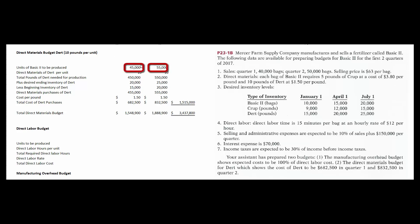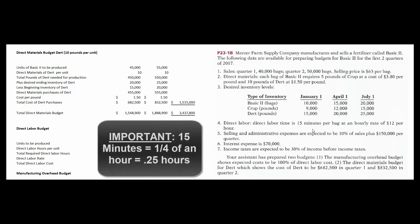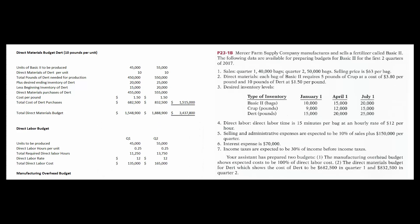Now we can create our direct labor budget. It takes a quarter of an hour — 15 minutes, or 0.25 hours — at $12 an hour to make each bag. We're going to make 45,000 units in quarter one: 0.25 times 45,000 gives us 11,250 labor hours, times $12 an hour gives a direct labor cost of $135,000. For quarter two, production is 55,000 units: 0.25 times 55,000 gives 13,750 hours, times $12 an hour gives a labor budget of $165,000.